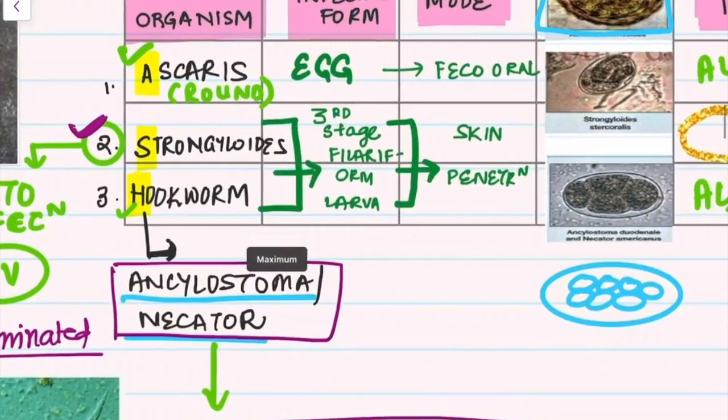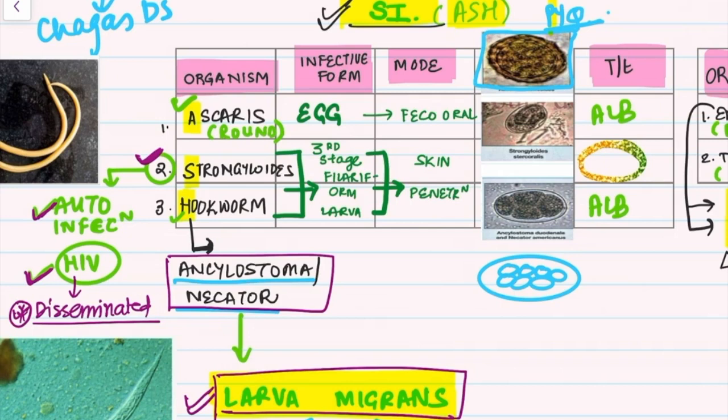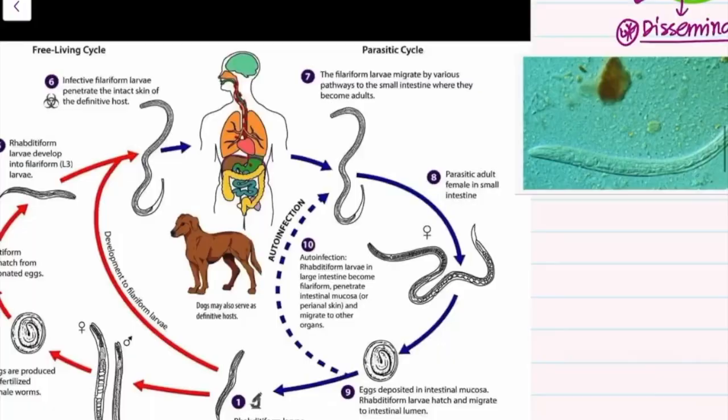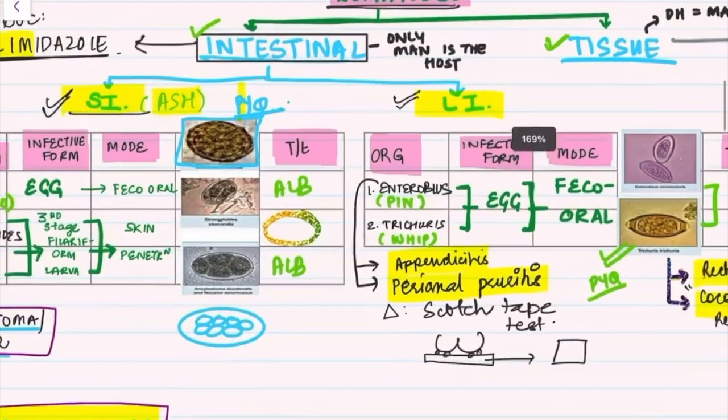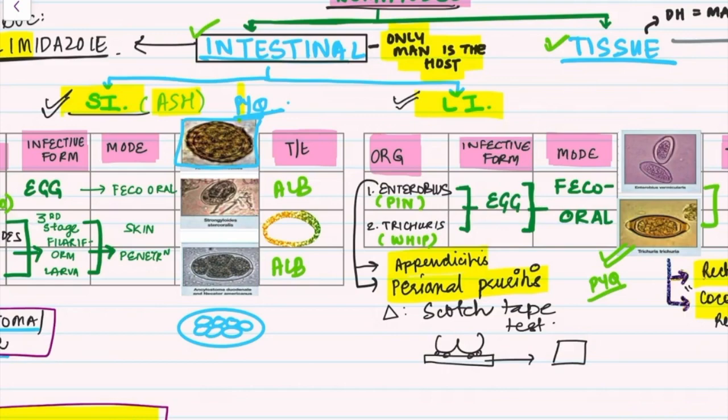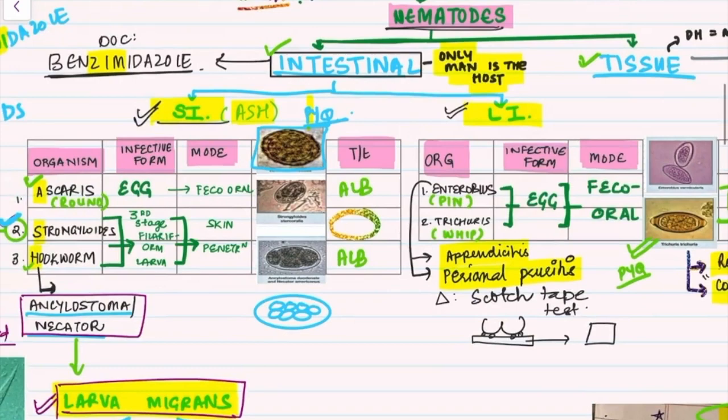For Strongyloides, the infective form is the third-stage filariform larva and the mode is skin penetration — same for hookworm. Strongyloides is one of the most important previous year questions. A key point to remember is that for all intestinal nematodes, only man is the host, so you will not find an intermediate or definitive host distinction — there is one host, which is man.